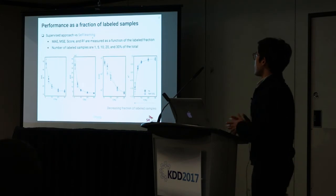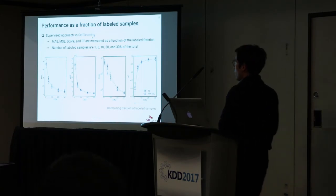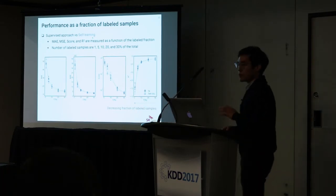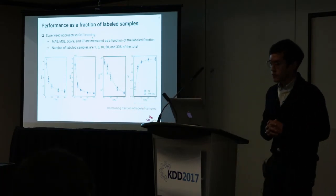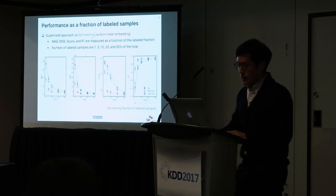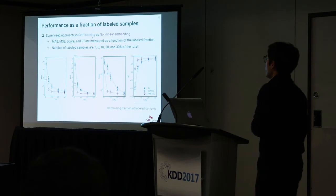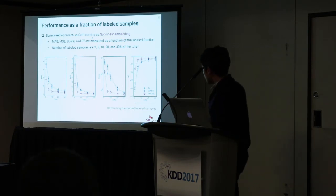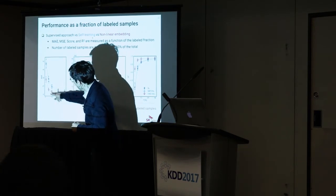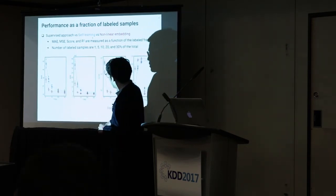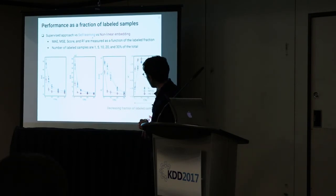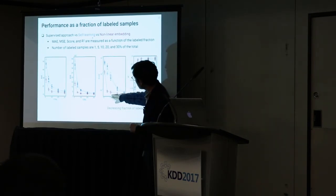When using self-learning, there is almost no difference from the baseline — within statistical uncertainty, there is good consistency, meaning self-learning provides no meaningful advantage. However, when using our nonlinear embedding technique, the level of degradation is much smaller. At this scale, you can see the difference within statistical uncertainty down to as low as 5% labeled fraction.